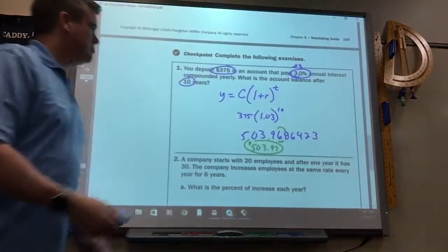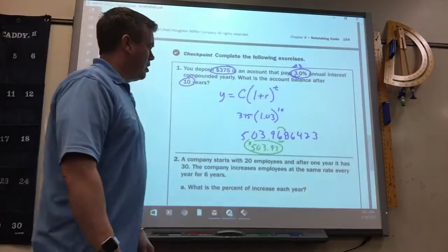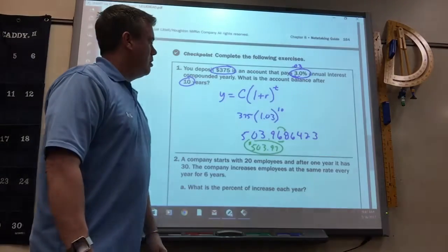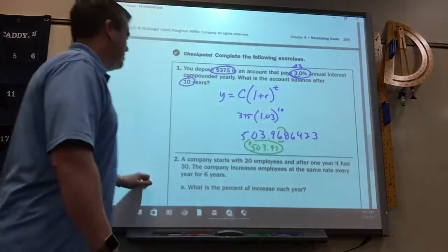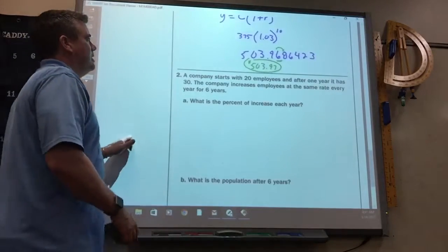But could you just round the 9? Round the 9? No, that would be rounding to the nearest dollar. You've got to round to the nearest cent.